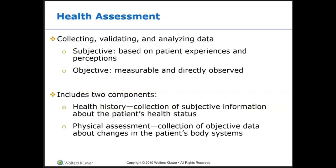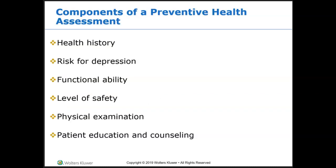The health assessment consists of two main components. First is the health history, which is the collection of subjective information about the patient's health status and their perception of their health status. And then the physical assessment, which is the objective data that we are documenting about changes in the patient's body systems. We're going to look at all eight body systems in this recording.